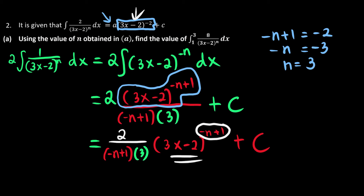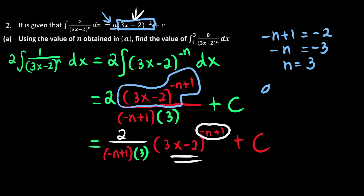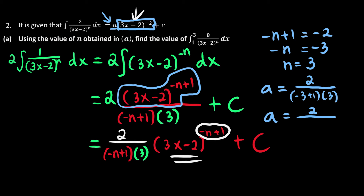So we've found that n equals 3. Now we look to find the value of a. a is the coefficient in front of (3x minus 2), so a must equal 2 over (negative n plus 1) times 3. With n equal to 3, that's 2 over (negative 3 plus 1) times 3, which is 2 over negative 2 times 3, which is 2 over negative 6. Simplifying, a equals negative 1 over 3, and we are done.